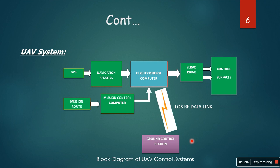This is the block diagram of the overall UAV system. The important components related to the flight control computer are highlighted here, along with the navigation sensors block. Navigation sensors can include GPS sensors, the IMU or inertial navigation sensors, and an air data system which gathers angle of attack and angle of sideslip information.